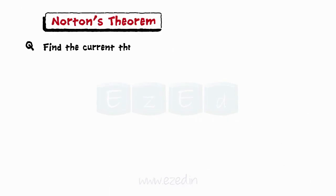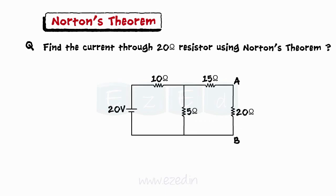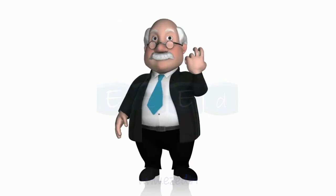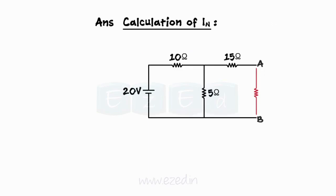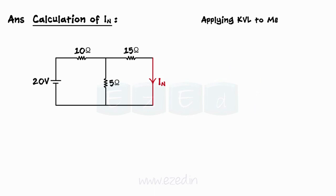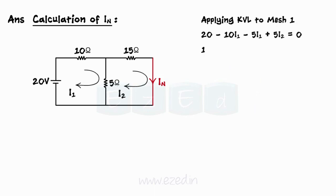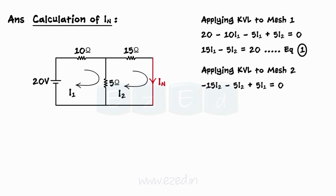Let's solve a question on Norton's Theorem: find the current through the 20 Ohms resistor using Norton's Theorem. The 20 Ohms resistor acts as a load. To find IN, the load resistor is replaced by a simple wire. Applying KVL to mesh 1, we get 15I1 minus 5I2 equals 20. Applying KVL to mesh 2, we get 5I1 minus 20I2 equals 0. Solving the two equations, we find I1 equals 1.45 Amperes and I2 equals 0.3636 Amperes.